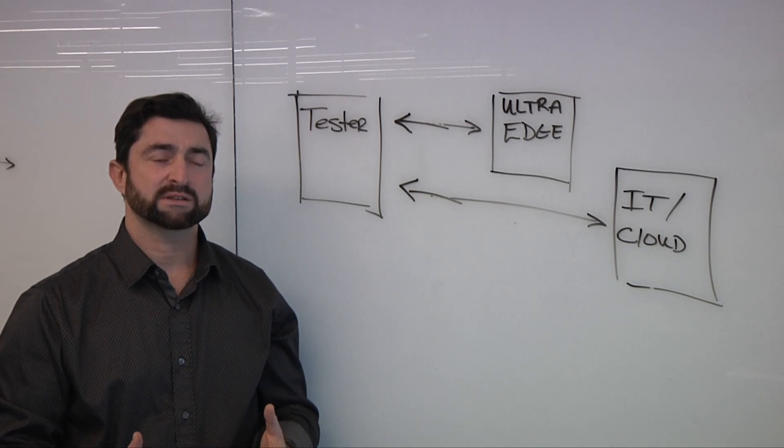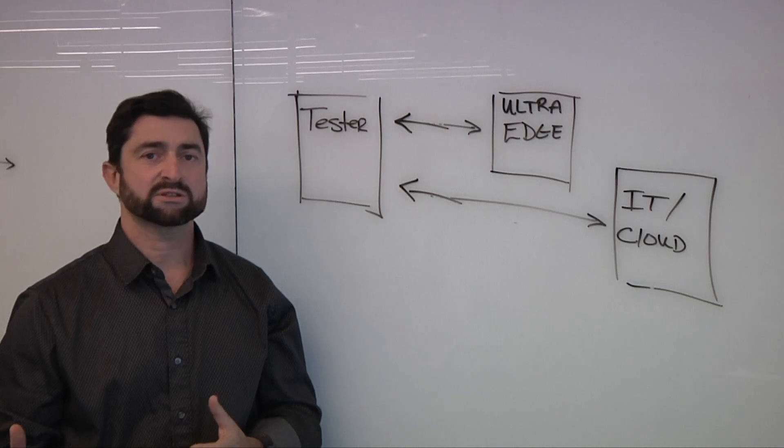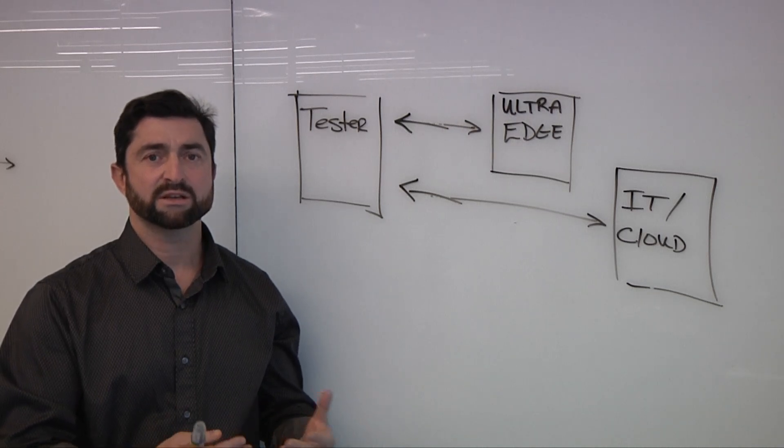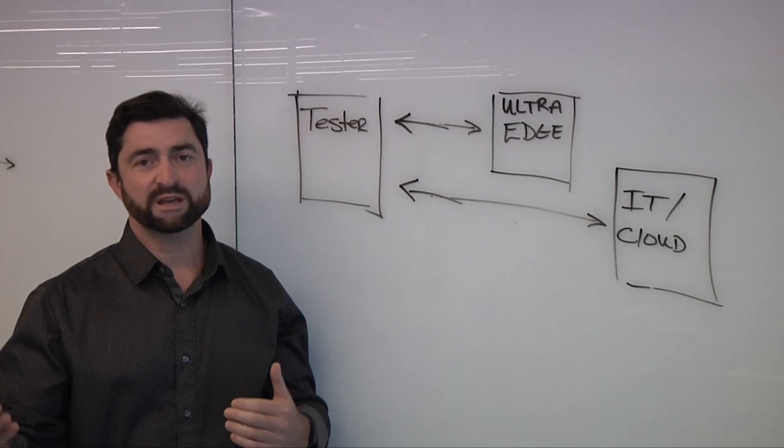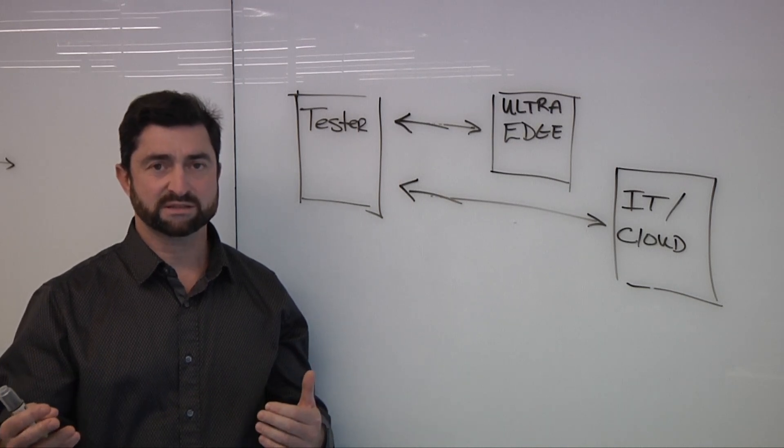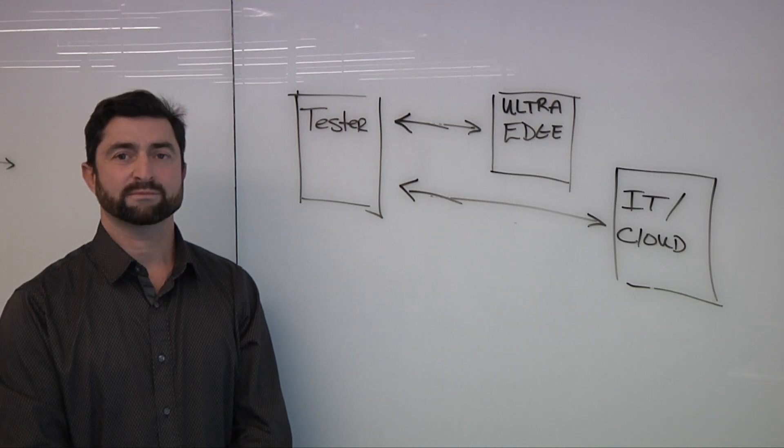The second one is in a typical deployment, you may have multiple different customers using the same tester in different periods of time, which means that there needs to be multiple agents or multiple solutions deployed onto the same tester. Historically, where has the agent been used and is that changing?